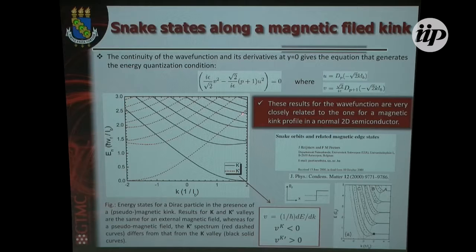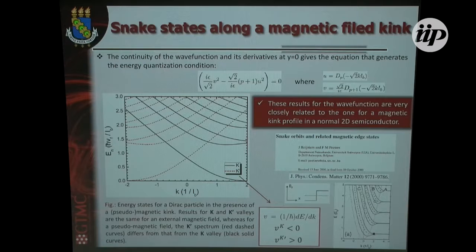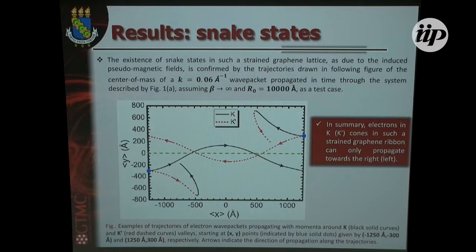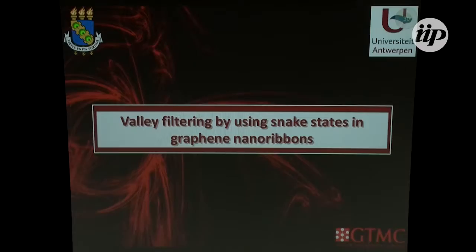Again, it suggests that this kind of proposal can be used as a valley filter, since electrons in K have positive group velocity and in K prime they have negative group velocity. Similar work was performed by Francois Peters, who claimed that the origin of these discretized energy states are snake states. The discretized energy states propagate along the kink — electrons in our system perform a trajectory like a snake, which you can understand just from the Lorentz force — this is valley filtering by snake states.